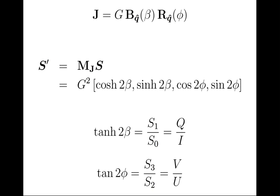Computing the equivalent Mueller matrix shows that the output Stokes parameters have hyperbolic cosine and sine for I and Q, and then cosine and sine of phi for U and V. Those two parameters can be estimated directly from the measured Stokes parameters: the hyperbolic tangent of two-beta is given by Stokes Q over total intensity (S1 over S0), and the tangent of two-phi is given by the ratio of Stokes V over Stokes U (S3 over S2).